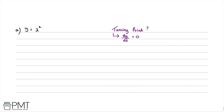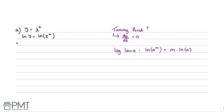We have y = x^x, so writing underneath we now have ln(y) = ln(x^x). Using the exponent log law, ln(a^m) = m·ln(a), we can bring the exponent x in front of the log term. Therefore ln(y) = x·ln(x).